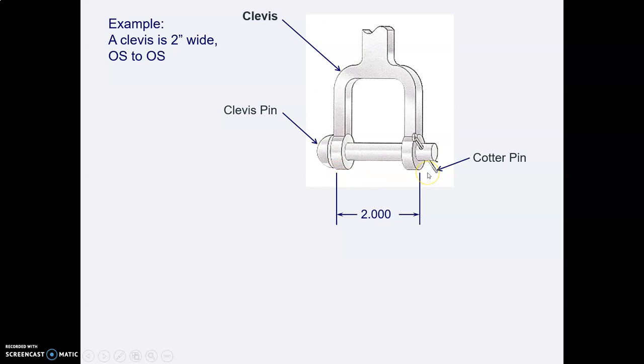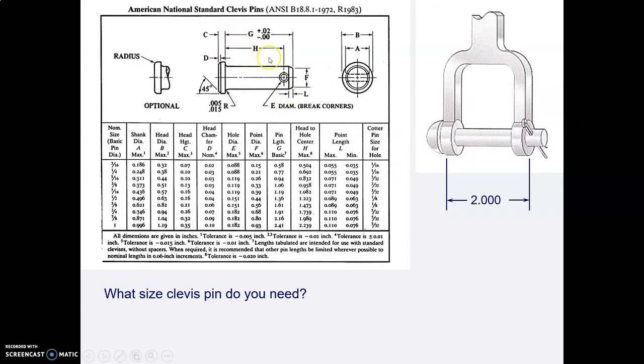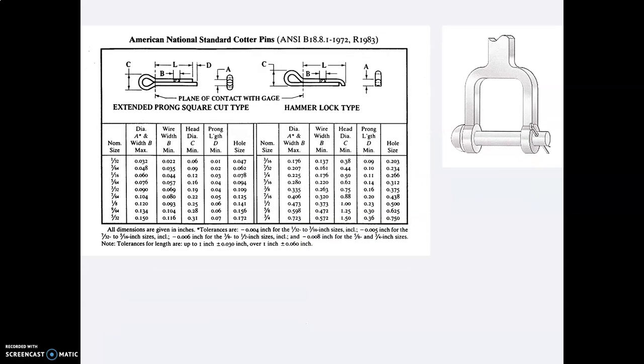What if we had a clevis that was two inches outside to outside. We need an h distance that's bigger than two inches don't we. So we're looking in this column here under h the distance from the head to the hole and the first one we come to that's bigger than two inches is the very bottom one. So looks like we're going to need a big old one inch clevis pin. Now what size cotter pin will we need for that. Well reading across the table that cotter pin will be 5/30 seconds and so if we wanted to know its dimensions here's our cotter pin table and a 5/30 seconds cotter pin goes through a hole that's 0.172.